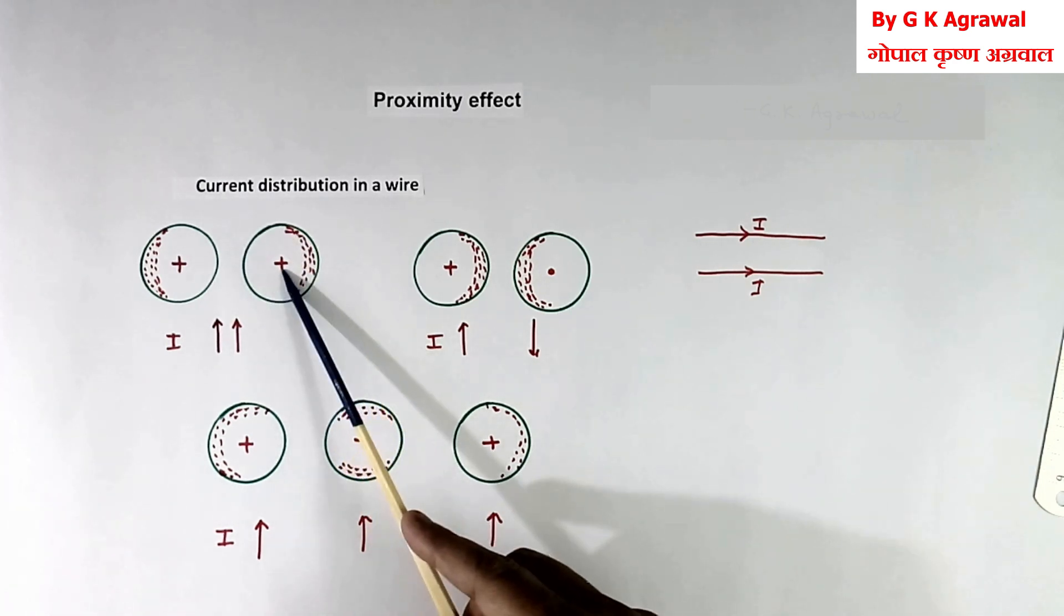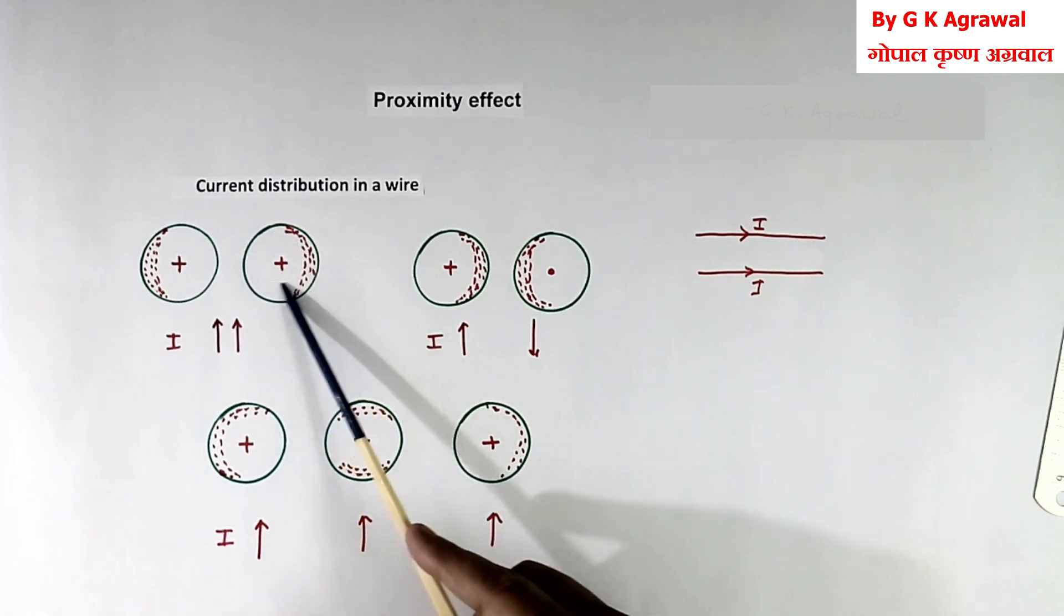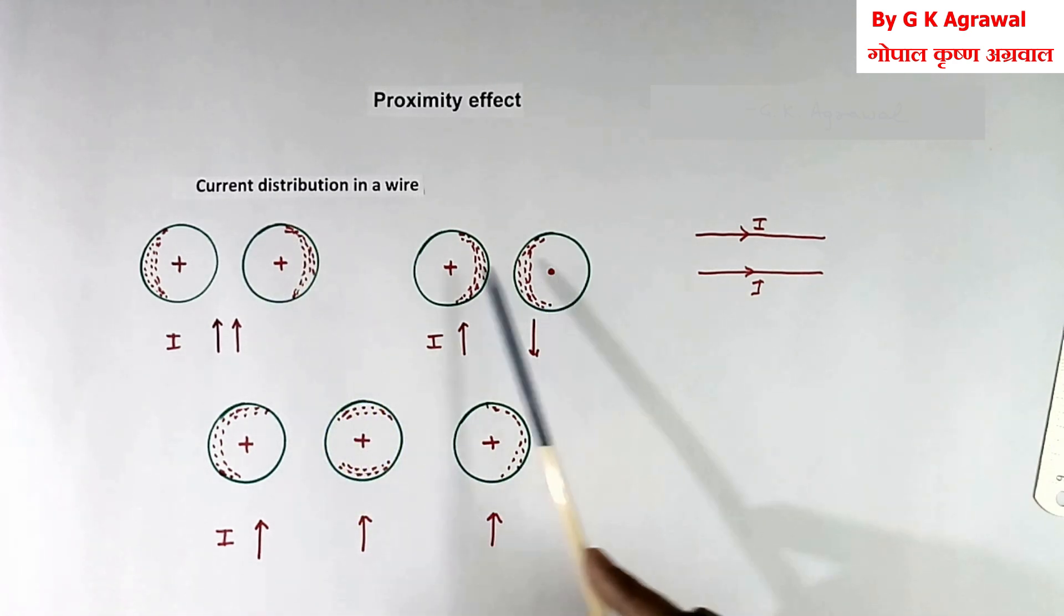Full area will not be used. So the resistance of wire will increase. So losses will be more.